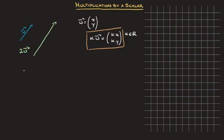Another example could be the vector negative 3u, or negative 3 times u. Negative 3u will be a vector which is parallel to the blue vector u, but in this case it will be 3 times longer. An important thing to note is that because we're multiplying u by a negative number, the result will point in the opposite direction. So it would be parallel to u, 3 times longer, but pointing in the opposite direction. Again, the effect of multiplying u by a number is to stretch it — here by a scale factor of 3 — and multiplying by negative 3 makes it point in the opposite direction.